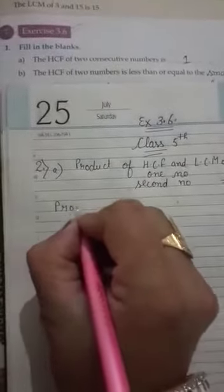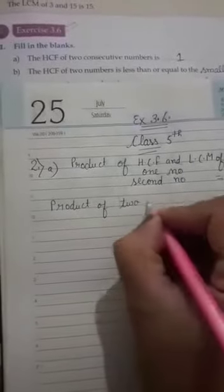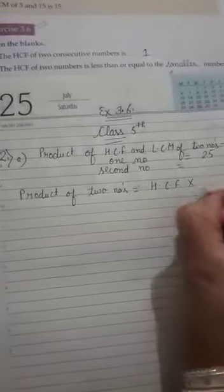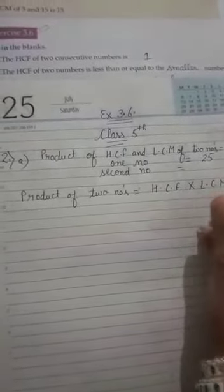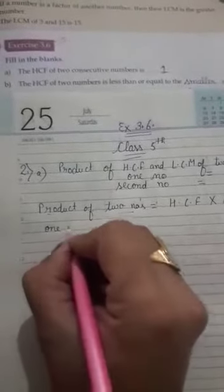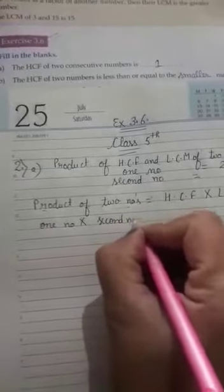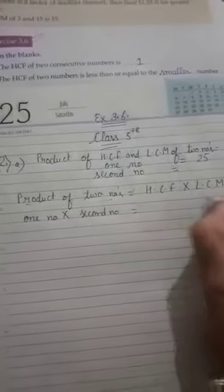Then formula is product of two numbers is equal to HCF multiply by LCM. Product of two numbers means one number multiply by second number.